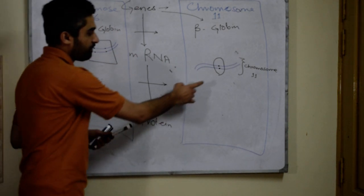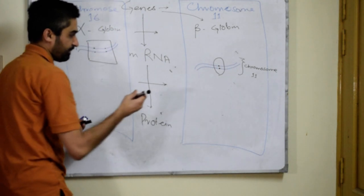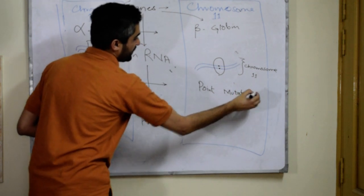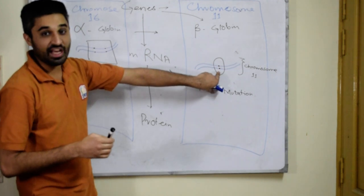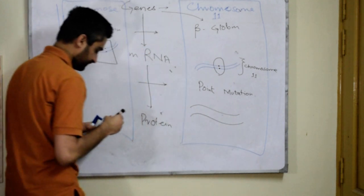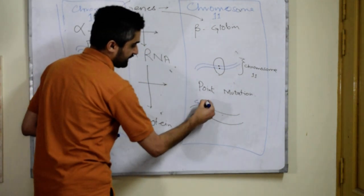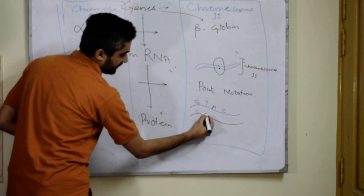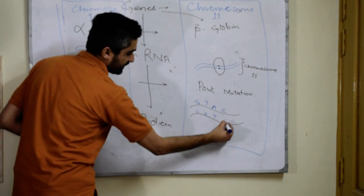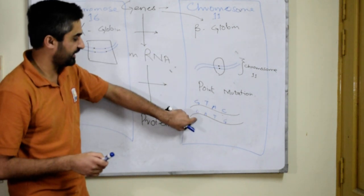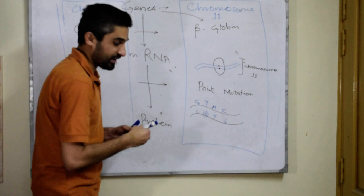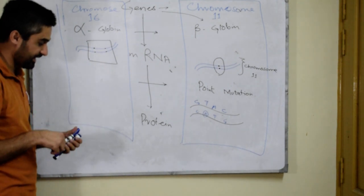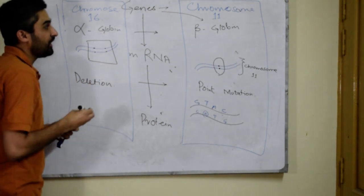Or it will be synthesized but cannot function properly. The common mutation leading to beta thalassemia is a point mutation. What do we mean by point mutation? For example, this gene has a normal nucleotide sequence: guanine, thymine, adenine, cytosine. Guanine pairs with cytosine, thymine pairs with adenine. If this adenine is replaced with any other nucleotide, that is a point mutation. On the other hand, the common mutation leading to alpha thalassemia is a deletion mutation.